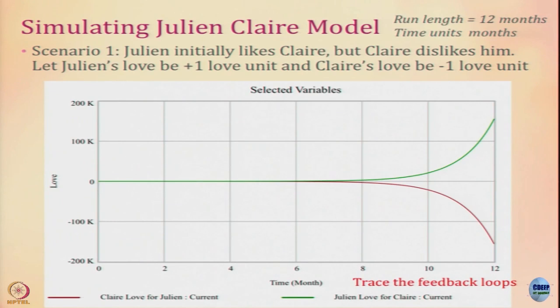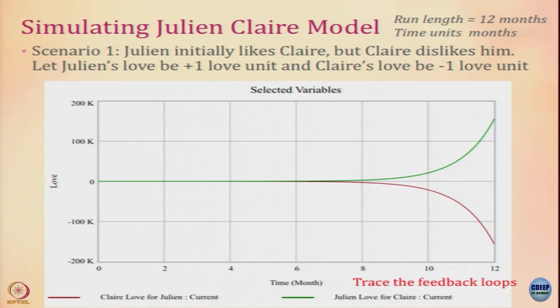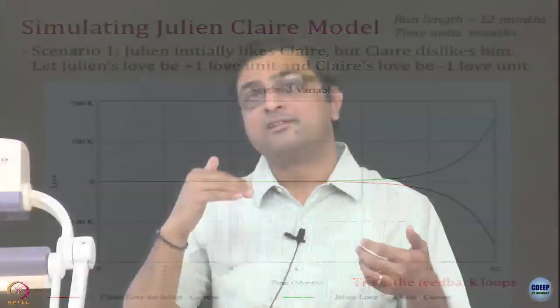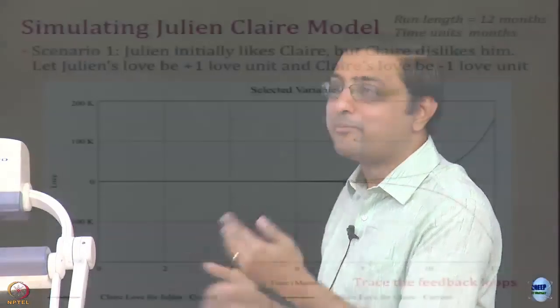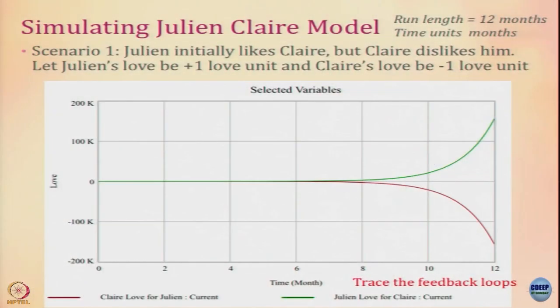If we trace the loops, we see it is actually a positive feedback loop. Julian's love for Claire increases, so Claire starts to dislike him. The more Claire dislikes, the more Julian loves her. It becomes a positive feedback system because there are two negatives in the loop — two negatives result in a positive feedback system, which has caused this exponential behavior.